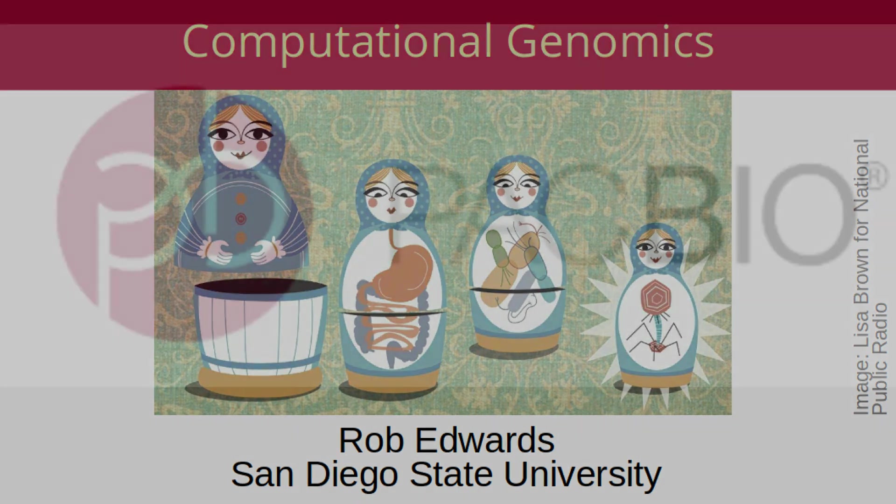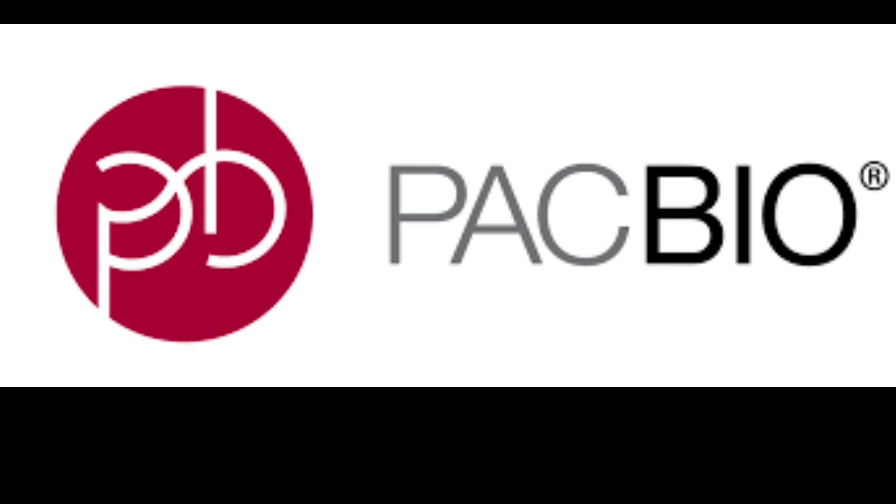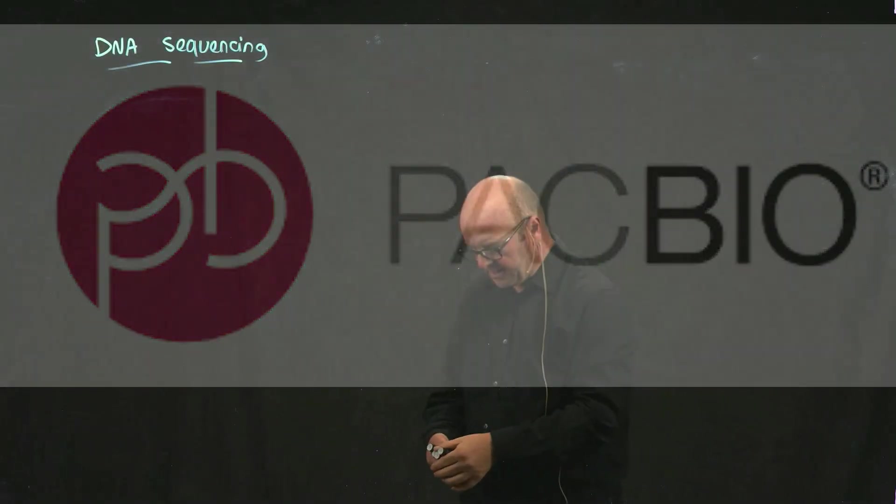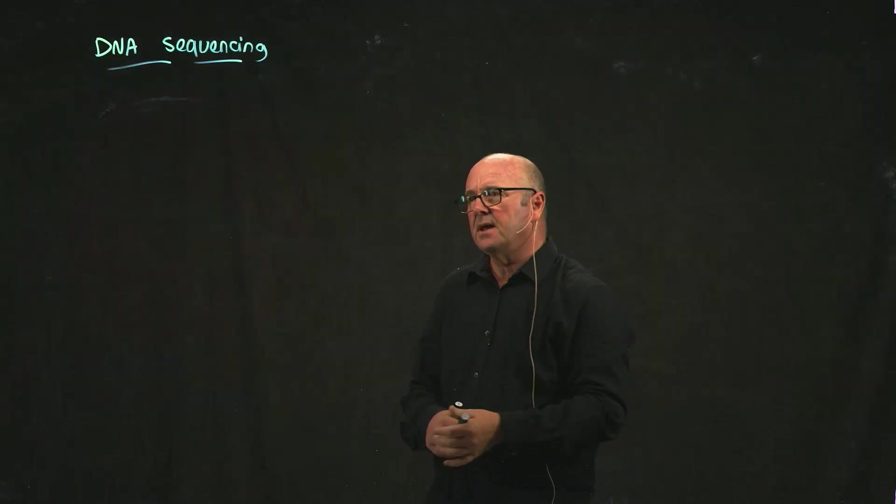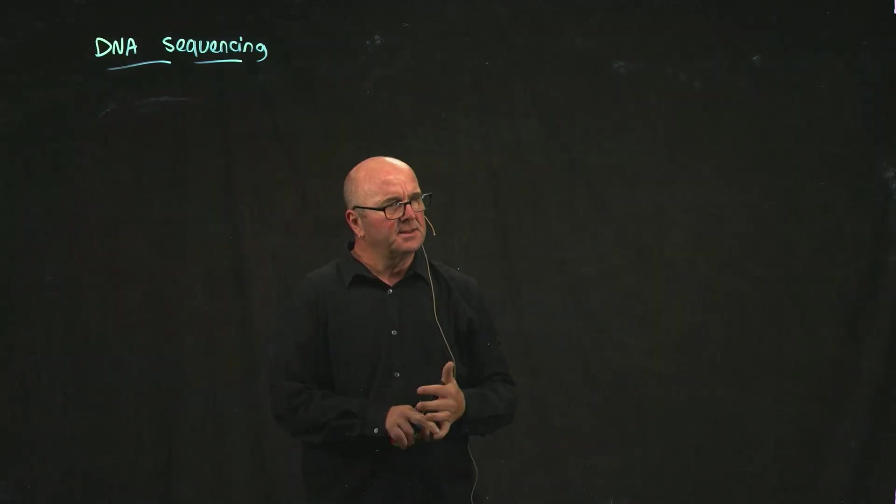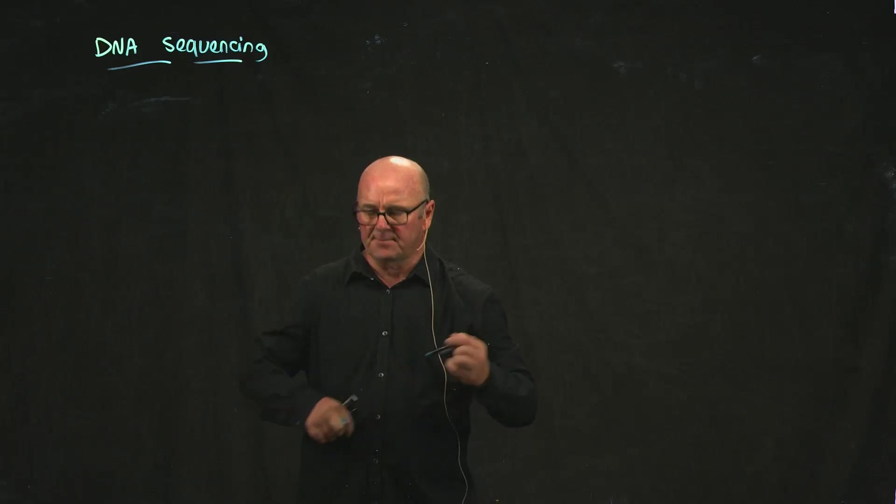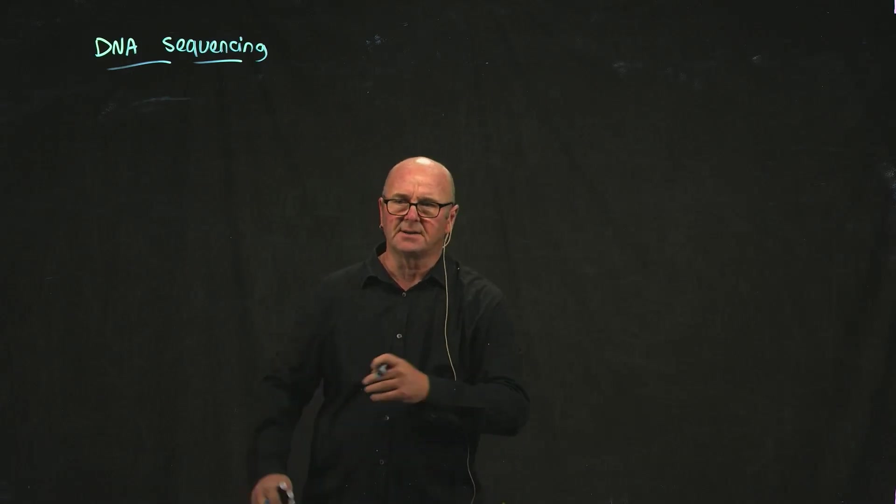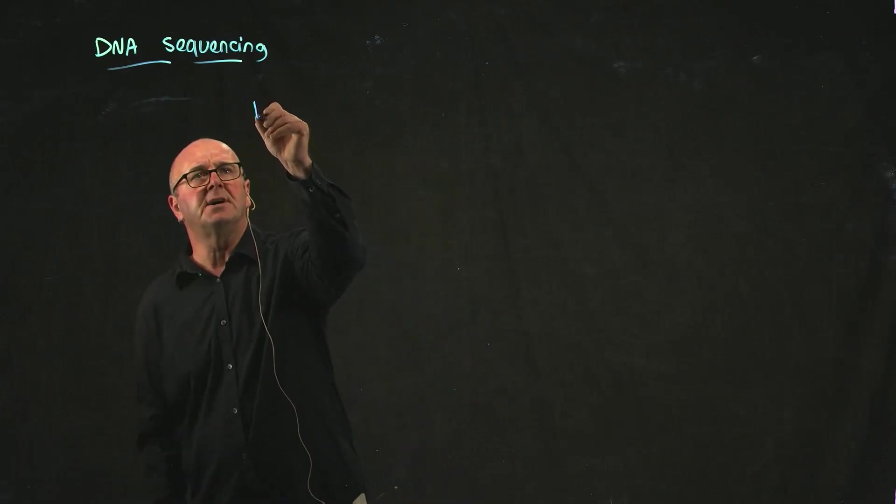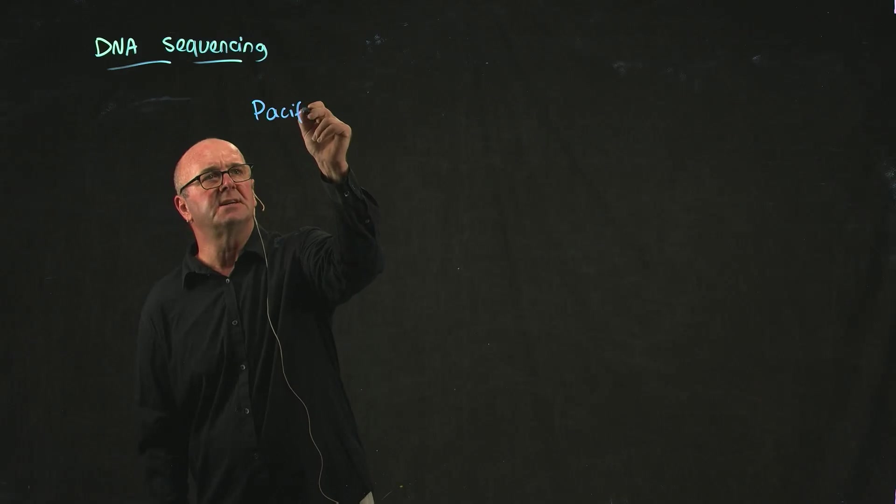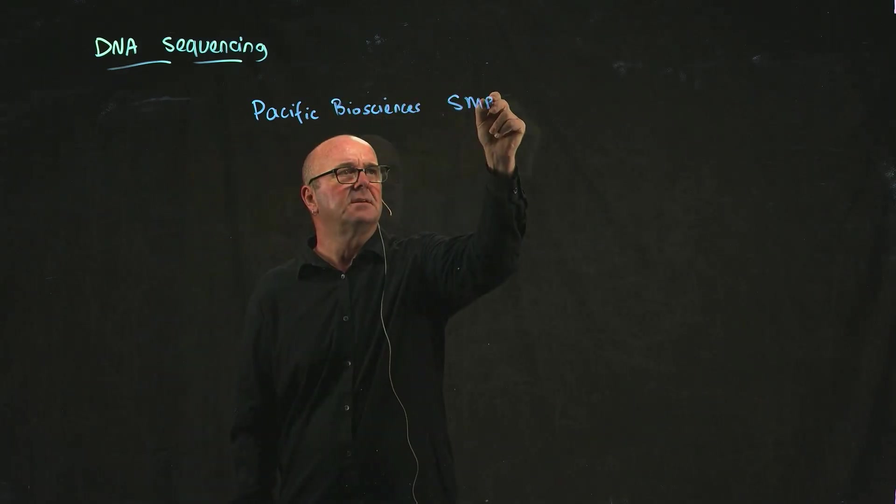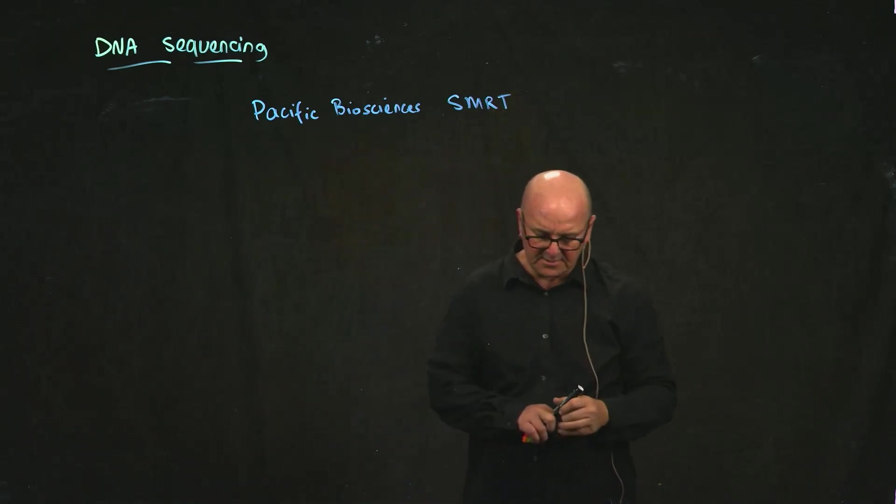During the course, we're going to see the limitations of short read sequencing as we take a look at assembling and analyzing genomes. There are two technologies that came out in recent years that are a counterpoint to those kinds of sequencing technologies. The first one is called Pacific Biosciences Single Molecule Sequencing.